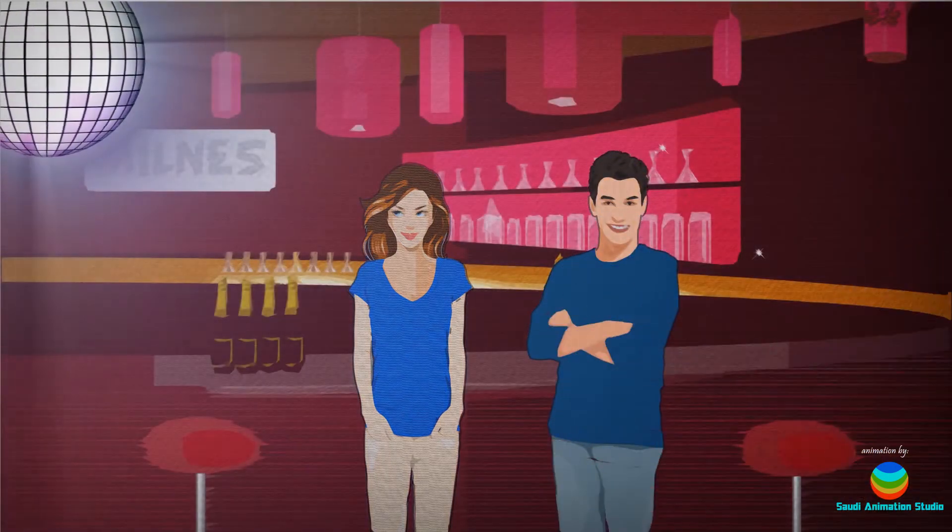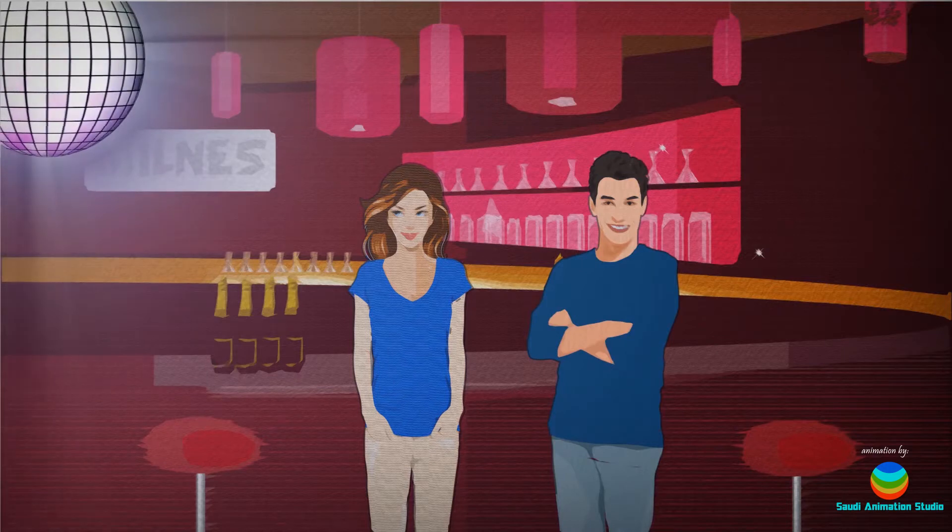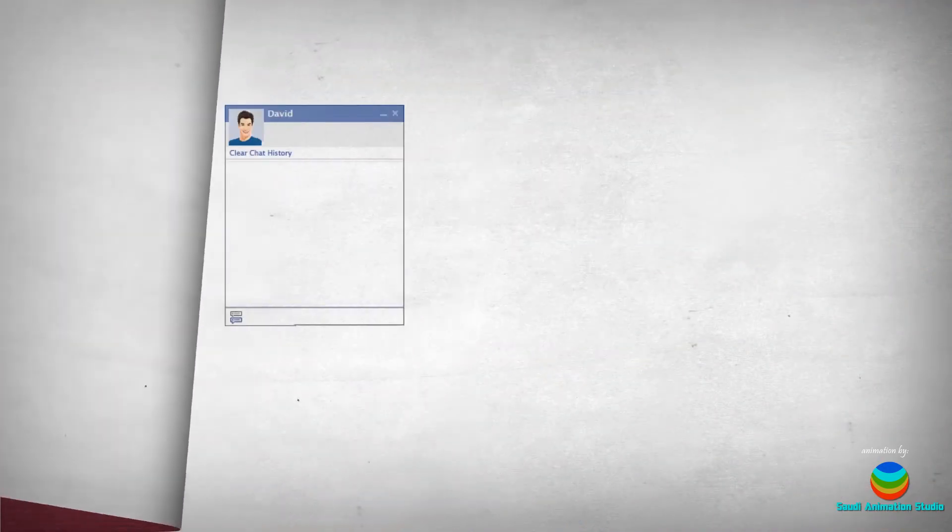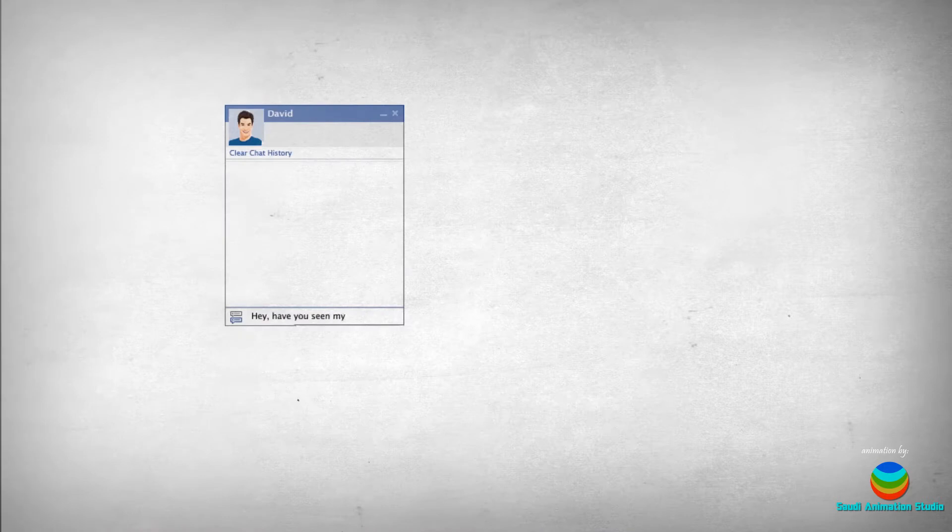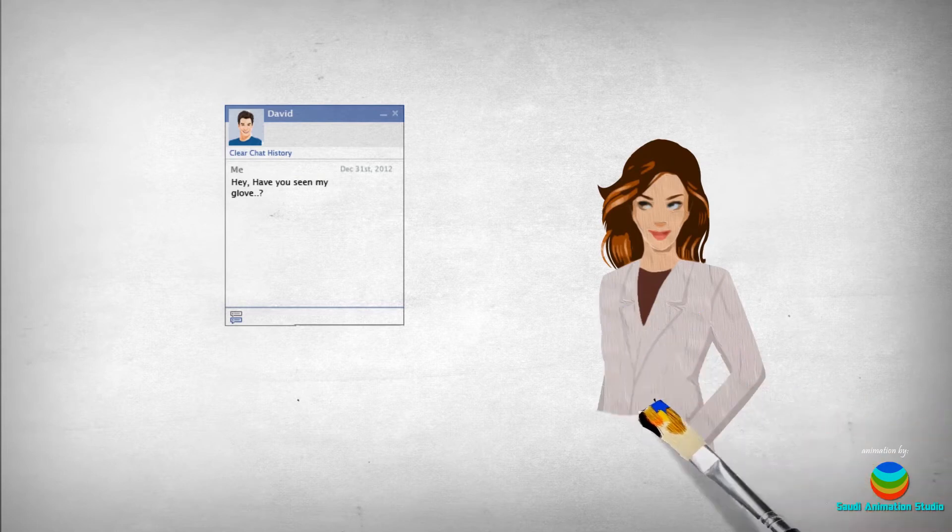At the end of the night, Ellie realizes she's lost her glove and frantically looks for it. That night, she desperately tries to reach out to anyone who could have seen her glove. She even writes a note to David on Facebook and asks him if he has seen it, but she never hears back from him.